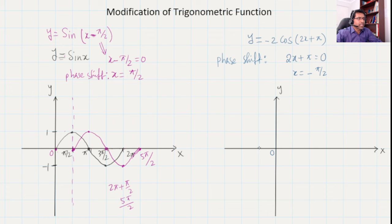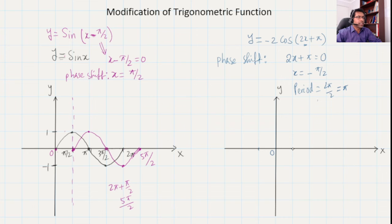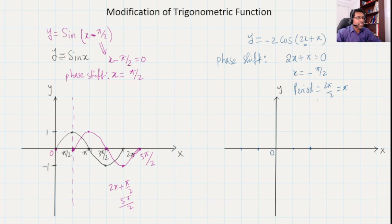Now what is our period? It is no longer 2π because we have 2x, so b equals 2. The period is 2π over 2, which means our period is π. If we start from minus π/2, it will finish at positive π/2, and the gap is π. To make the graph look nicer, let's say this is our minus π/2 and this is plus π/2, and each grid step is π/4 — this is minus π/4 and this is π/4.